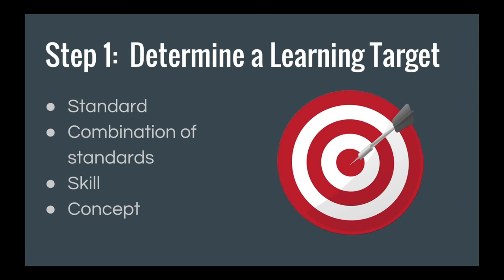The first step of writing a good learning progression is to determine a learning target. Most of the time that learning target is a standard or a combination of standards that make sense together. Sometimes, though, students will come in having difficulty with a particular skill or concept, and it will be important to write a learning progression for that. So you can also do learning progressions for skills and concepts as well as standards and combinations of standards.